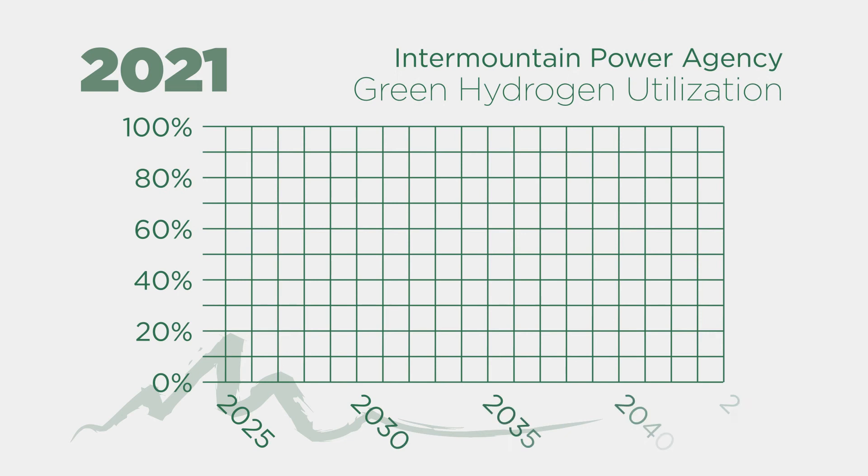The new natural gas generating units will be designed to utilize 30% green hydrogen fuel at startup, transitioning to 100% hydrogen fuel by 2045 as technology improves.